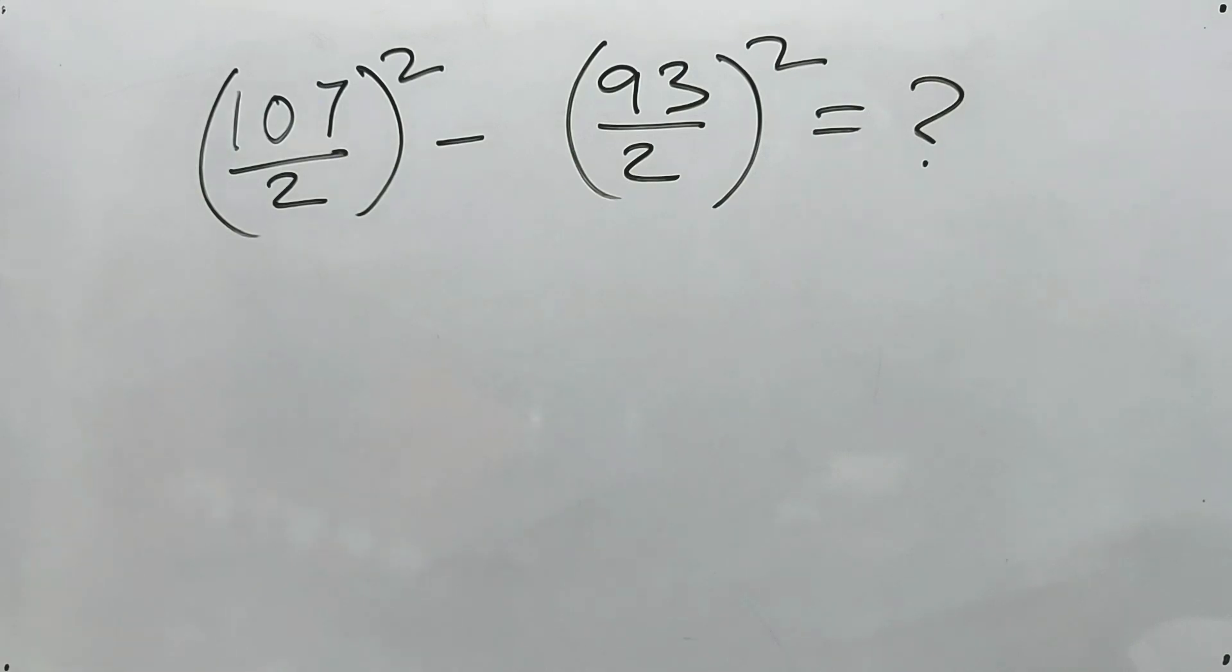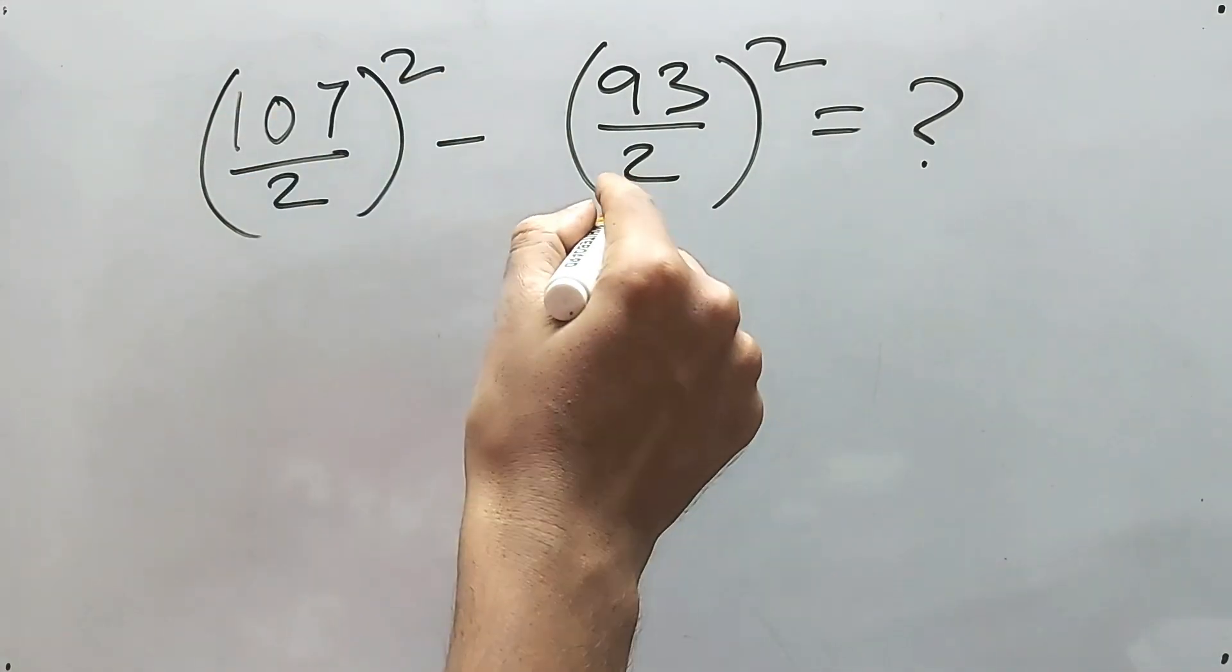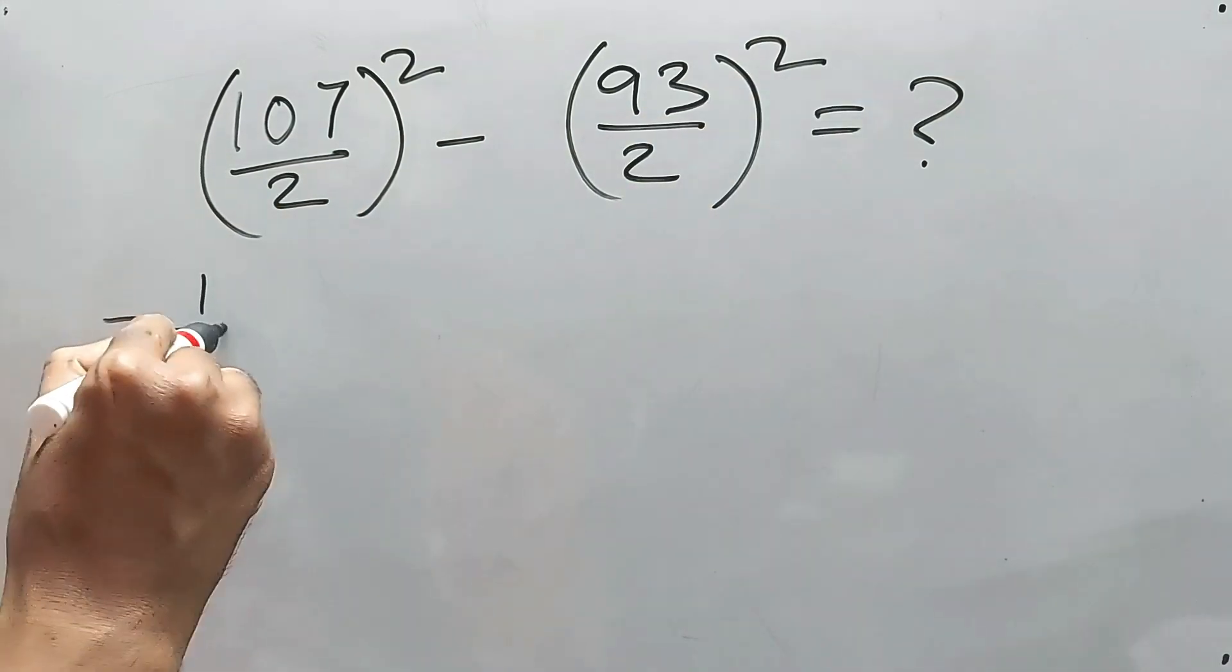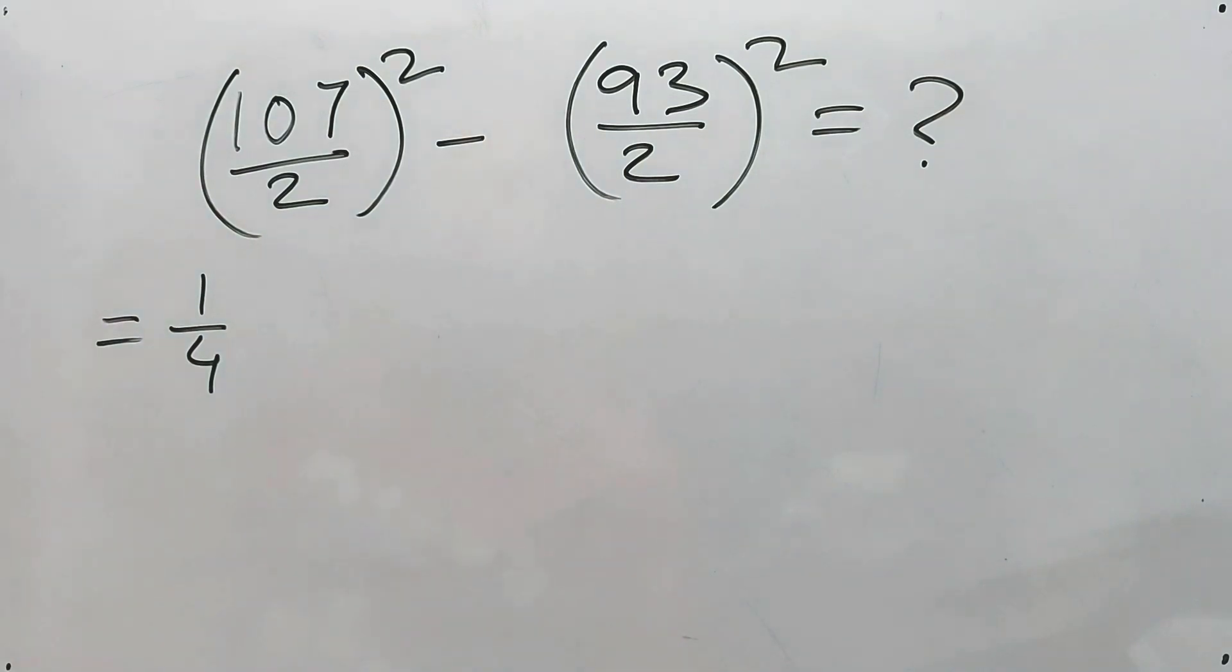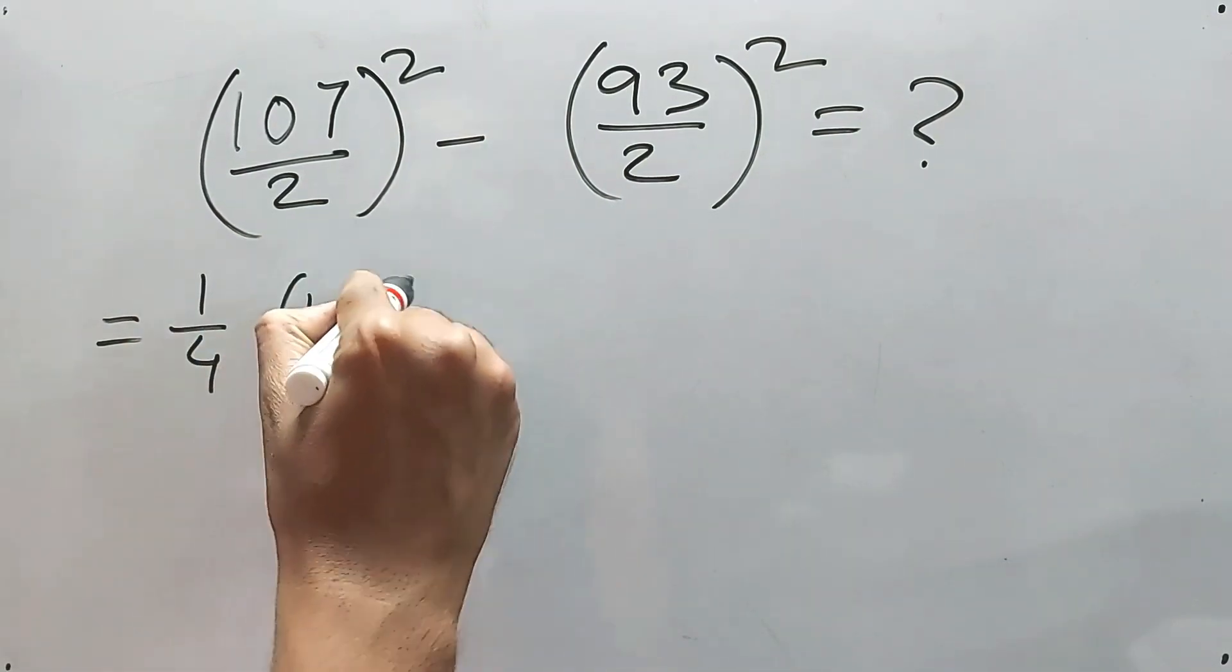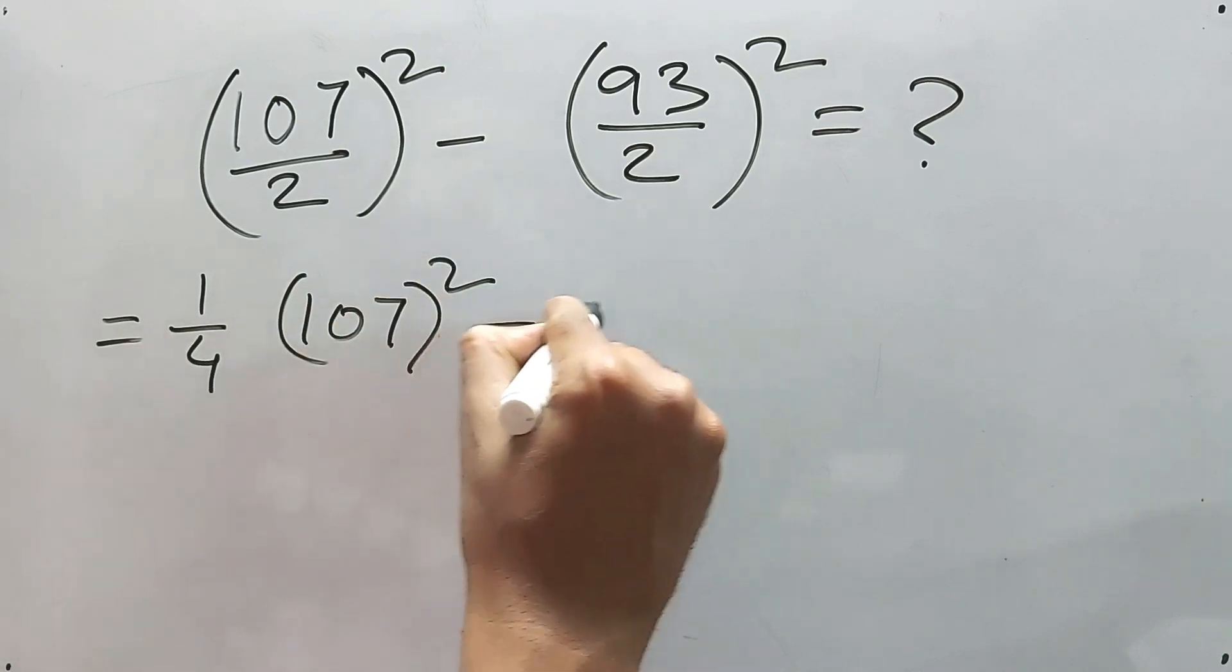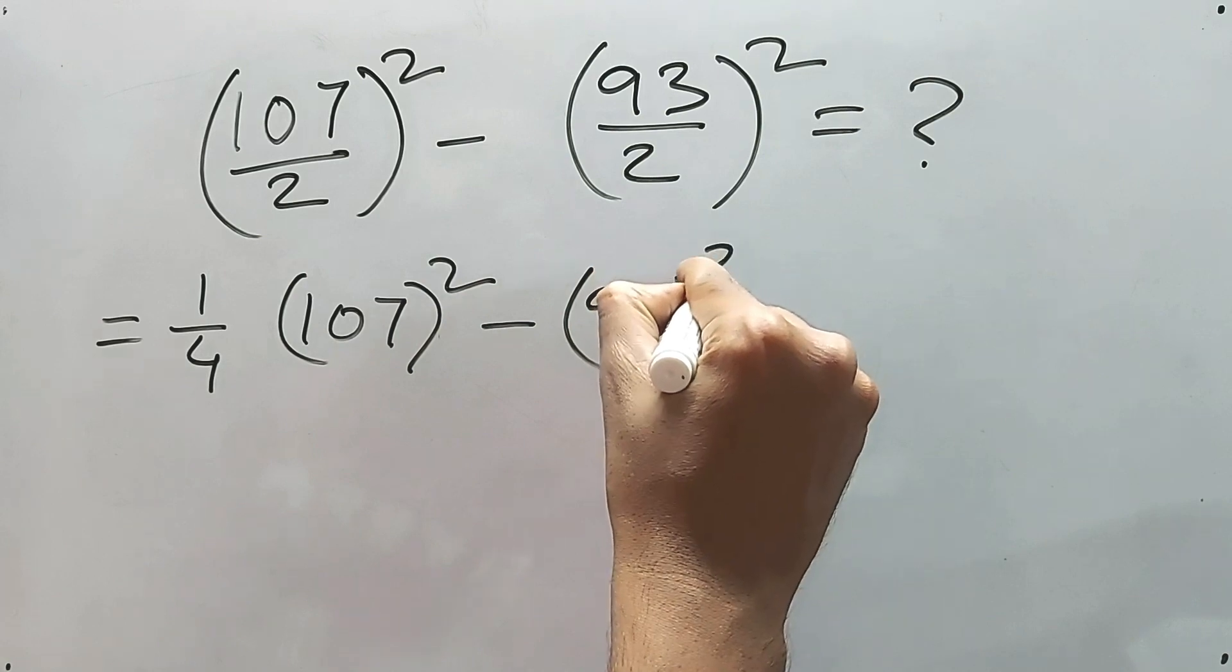All right. Now, 2² means 4, here also 2² is 4. So 1/4 will be common for both the terms, and 107² minus 93² square.